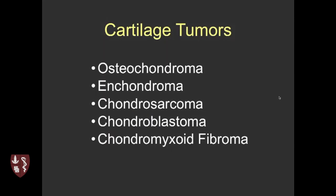There are really five types of lesions we'll talk about today: the combination of bone and cartilage — osteochondroma — then enchondroma and chondrosarcoma. That's kind of the core of what becomes a dilemma in imaging. And the less common lesions of chondroblastoma and chondromyxoid fibroma.